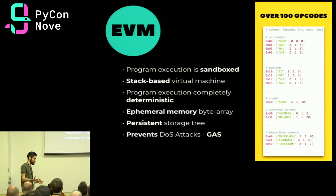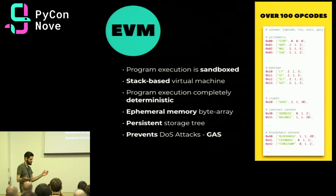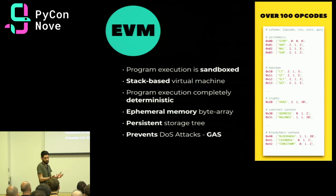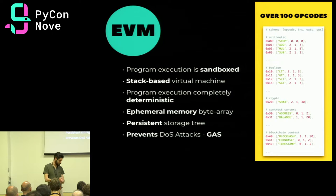The EVM also introduces the concept of gas, which is how it prevents denial-of-service attacks. You might ask: if I have this Ethereum Virtual Machine running on a distributed network and I call a function, it runs on all nodes simultaneously — what if I run a 'while True: print(lol)' script? It would overflow the network. With gas, you have a price for every opcode you run. Gas is a subdivision of Ether, so running opcodes costs you actual money. If you have millions to spend to overflow the network, go ahead. Otherwise, you'll be careful about how much you compute.